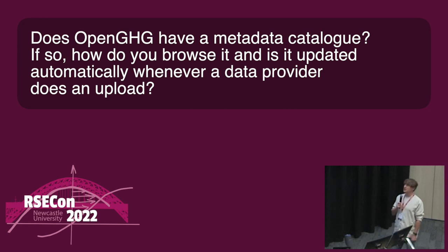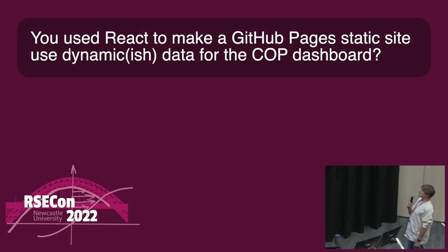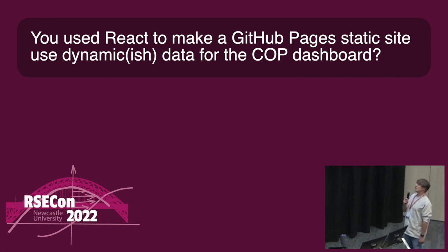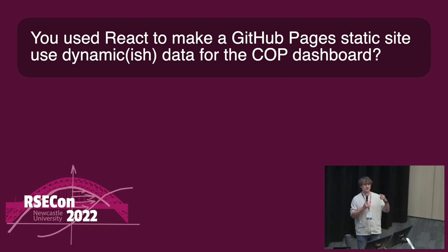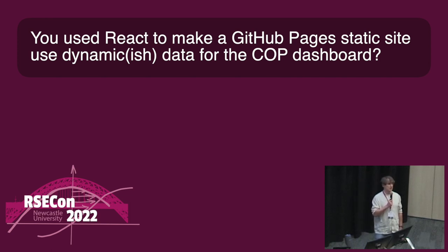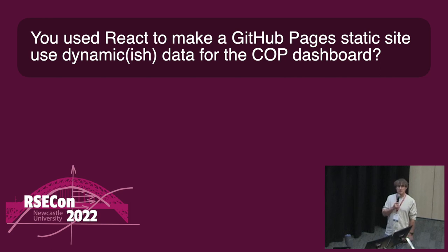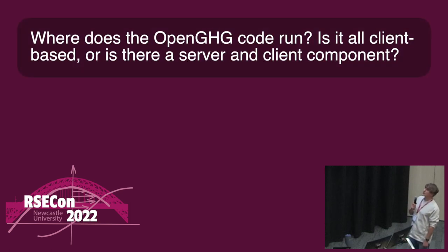Did you use React to make your pages a static site with dynamic data for the COP dashboard? Yes - we hosted that on GitHub Pages and used React to pull down data. When the data is parsed and pulled down from the different sites, it's committed to a GitHub repo, and when you load the dashboard you just pull the data from that GitHub repo. That works quite nicely - it's an easy way of just using GitHub for everything; you don't have to store it anywhere else. You just make a script that commits to a repo.